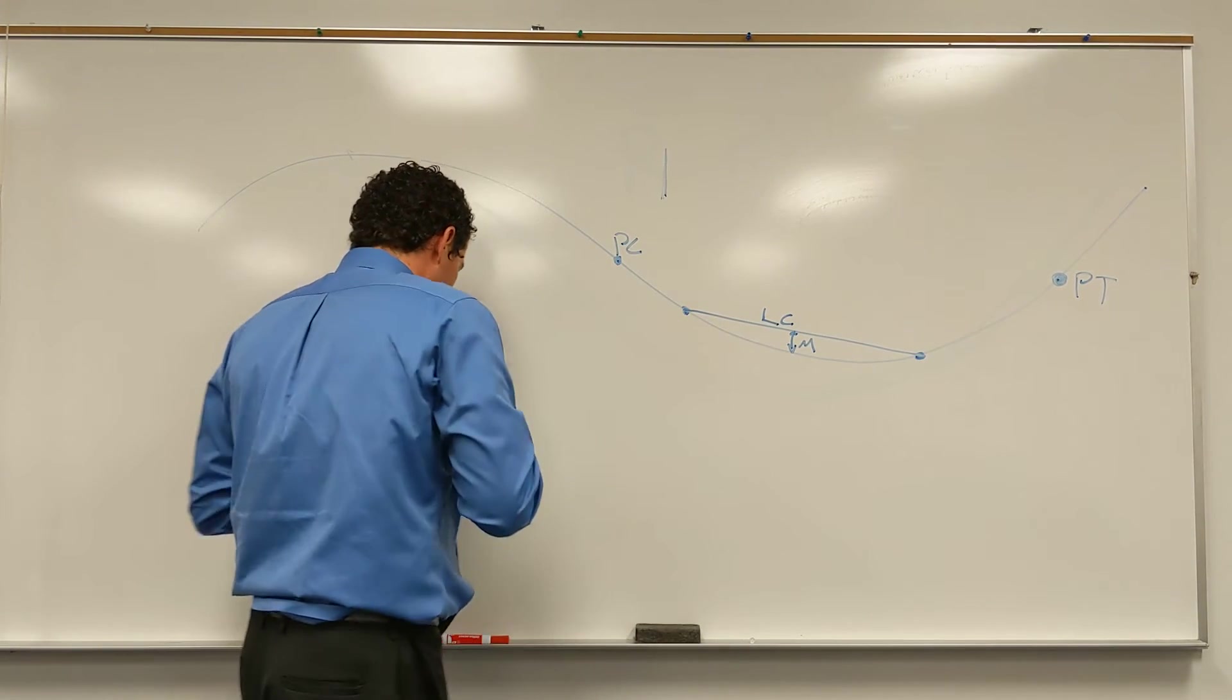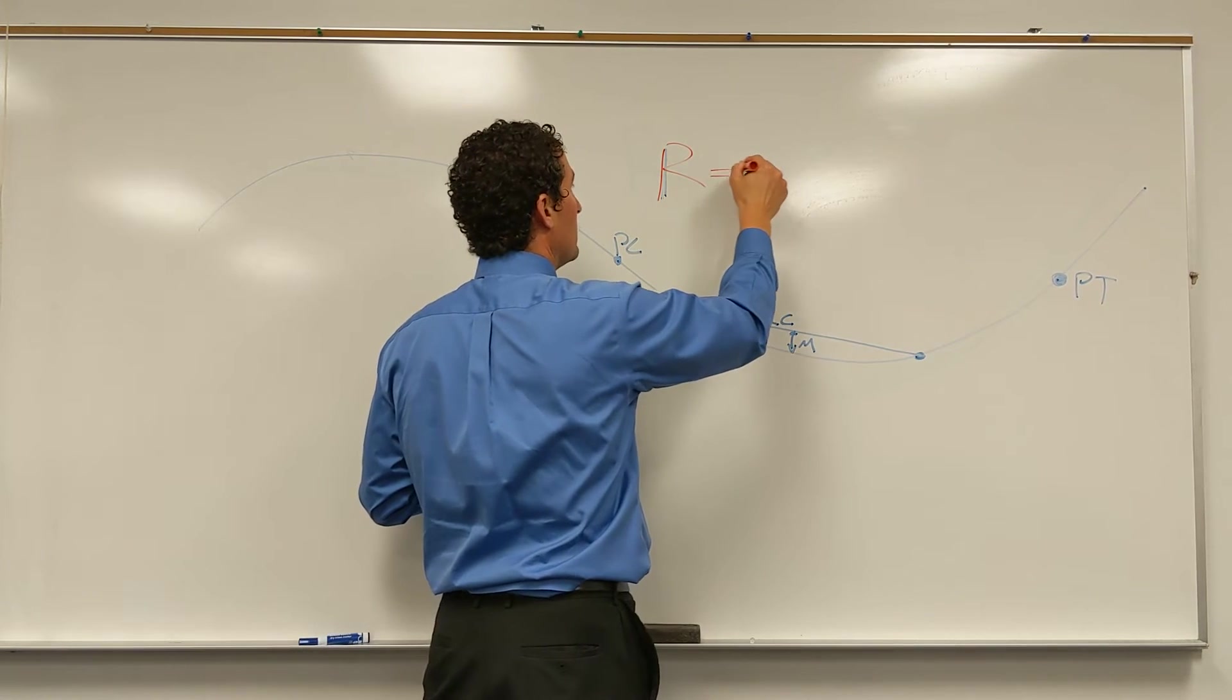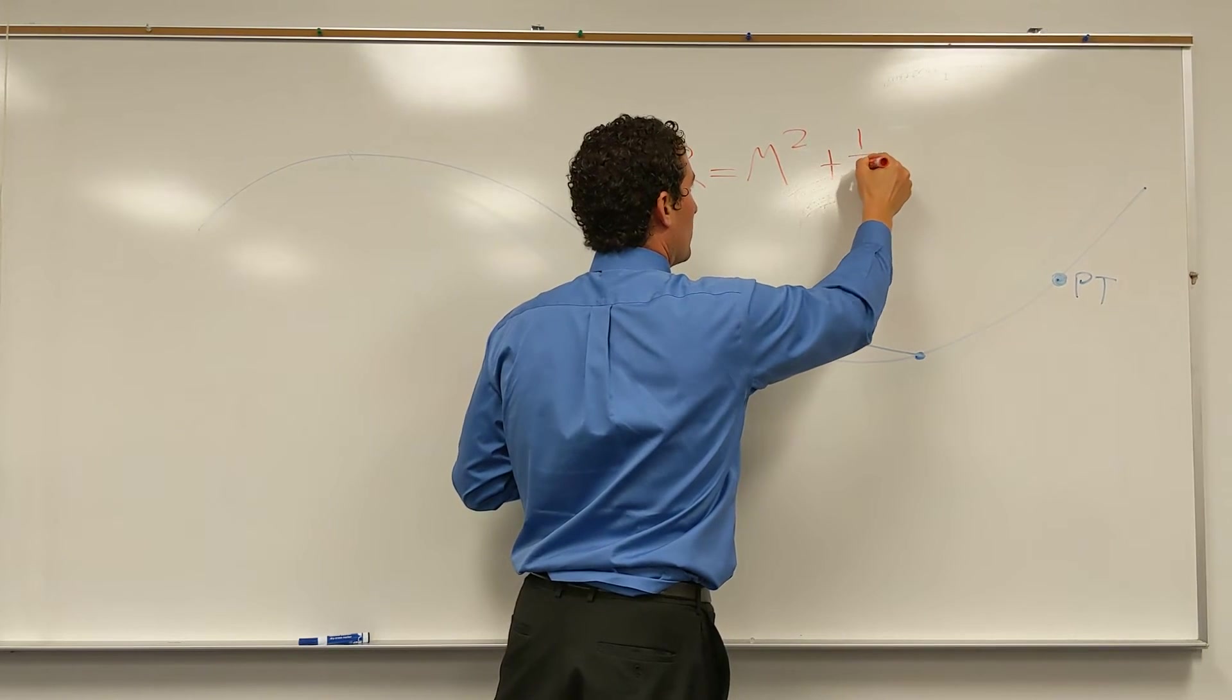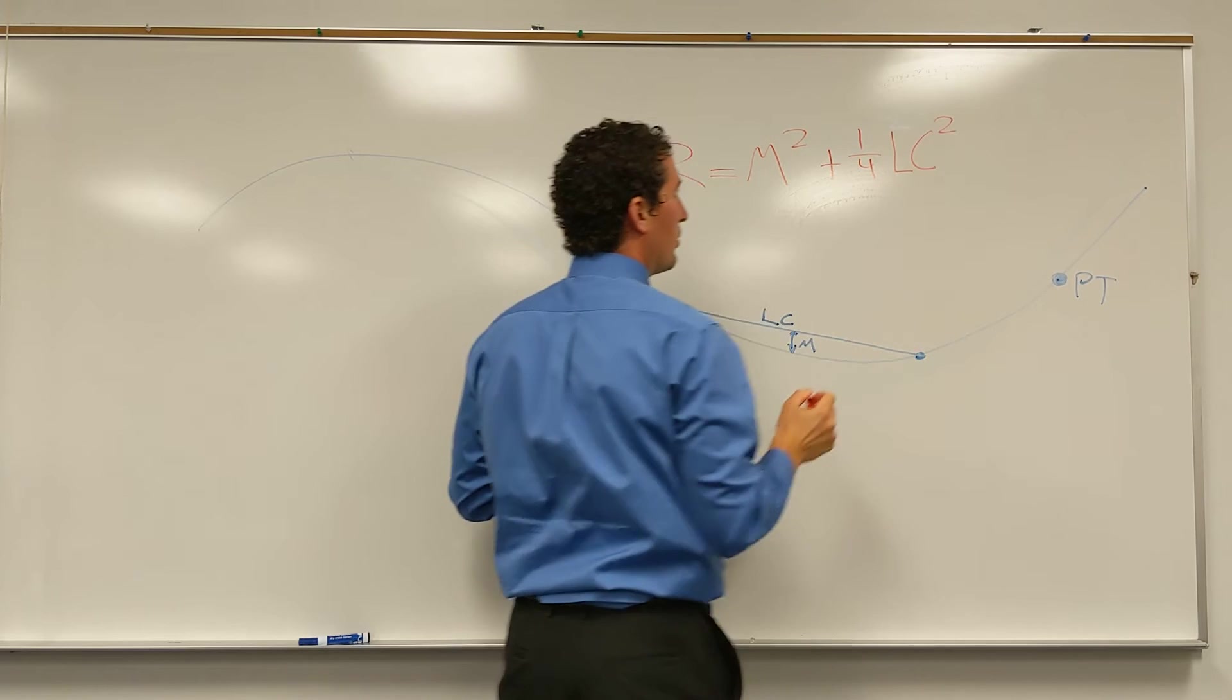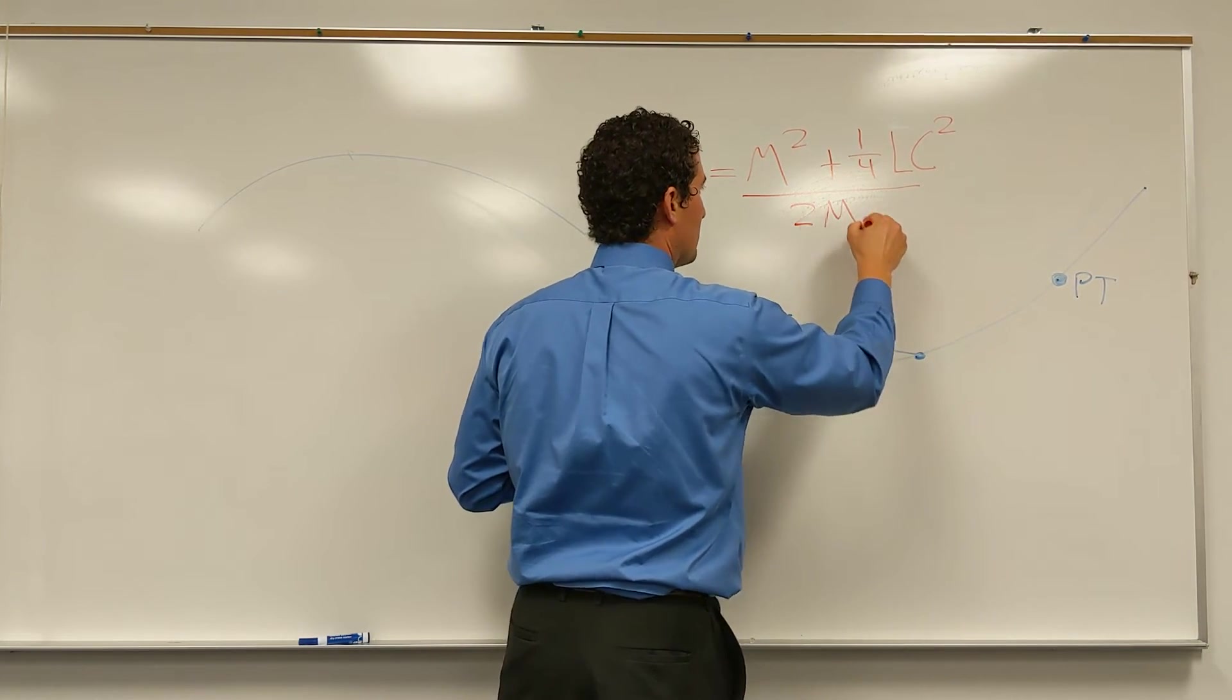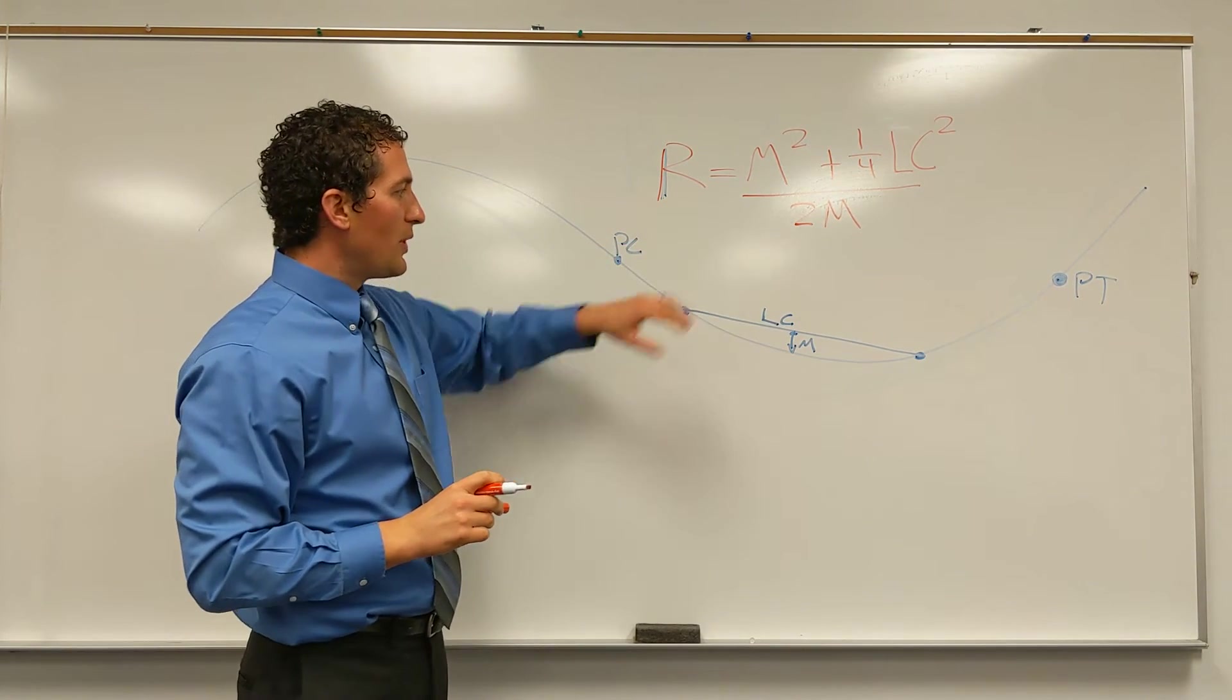Our equation for the radius is the middle ordinate squared plus one quarter or 0.25 times the long chord squared, divided by 2 times the middle ordinate. So this is our equation. We're going to solve for the radius.